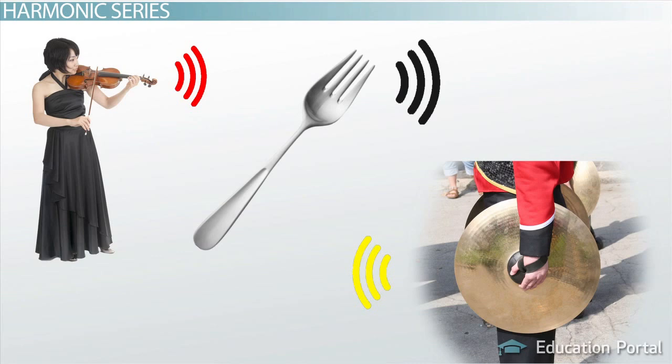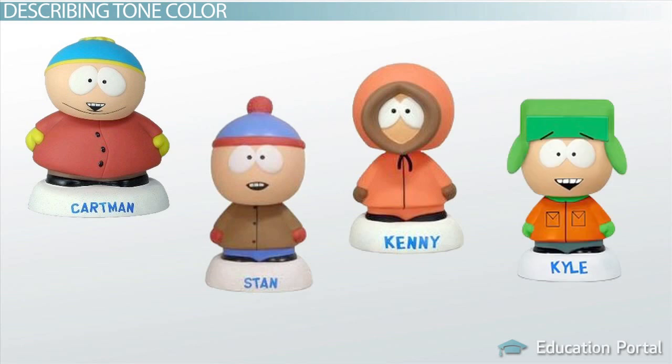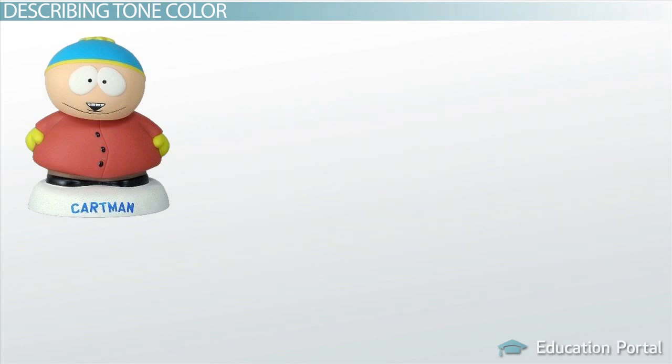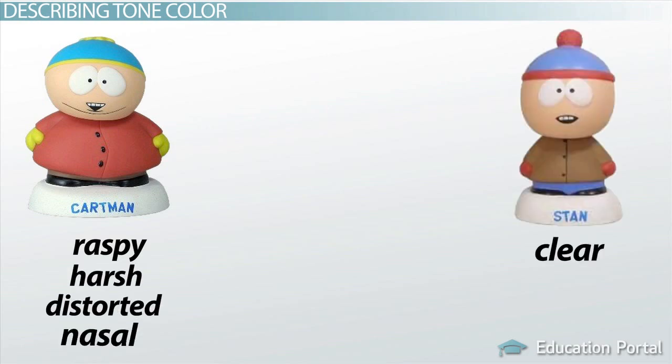But how can we describe the character of what we're hearing? Tone color can be described in many ways. In a previous example, you thought about the ways the South Park characters sound different. The tone quality of Eric Cartman's voice could be described as raspy, harsh, distorted, nasal, while the voice of Stan Marsh could be described as clear and clean.